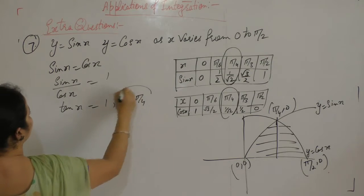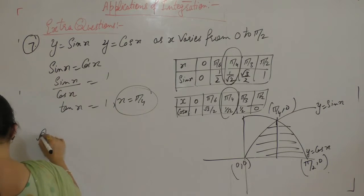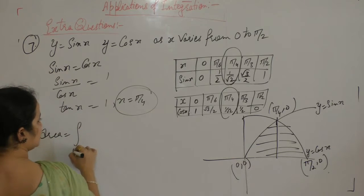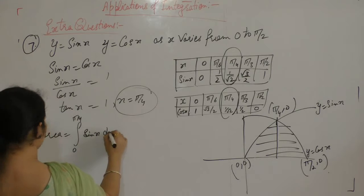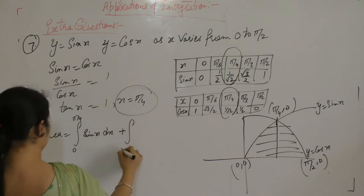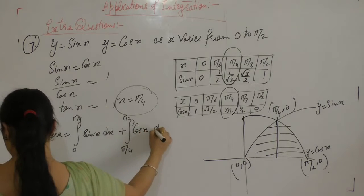π by 4 is the point where the two curves are intersected. So area is equal to 0 to π by 4, sin x dx, plus π by 4 to π by 2, cos x dx.